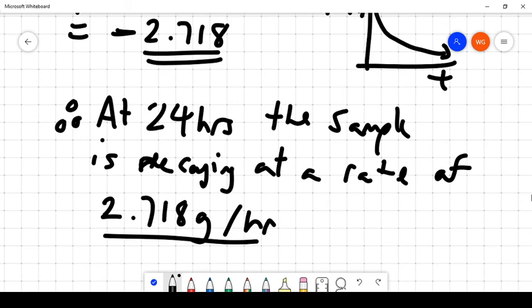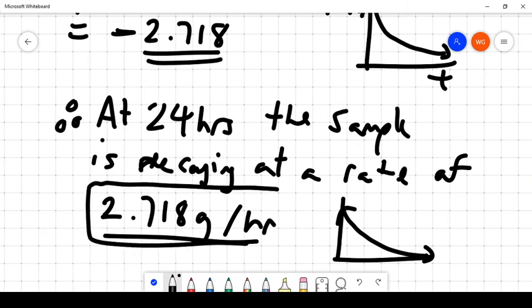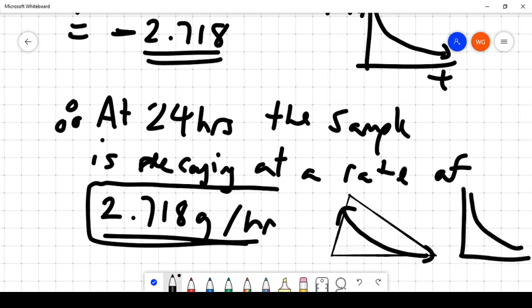That rate will change as time goes by because it's not a constant rate of decay. It's an exponential decay function. So with that being said, that will not remain a constant rate. It's not like it's decaying in a straight line. It's decaying in a rate that is changing over time. But at the instant of 24 hours, the rate would be the tangent line at that point, and that is a decay rate of 2.718 grams per hour. And remember, we always state a rate as one unit per another unit.